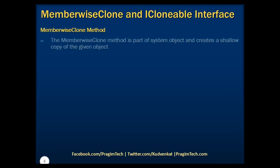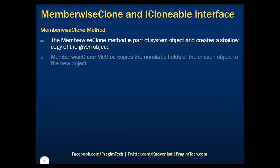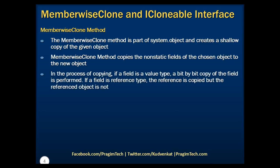Let's now understand the significance of the MemberwiseClone method in .NET. The MemberwiseClone method is part of System.Object and creates a shallow copy of the given object. It copies the non-static fields of the chosen object to the new object. In the process of copying, if MemberwiseClone finds that a field is a value type, a bit-by-bit copy of the field is performed. And if a field is a reference type, the reference is copied, but the referenced object is not.